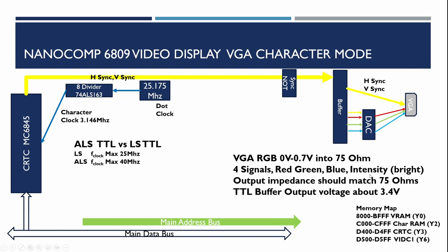The key thing about the video signal is that because it's a high-frequency signal, we need to make sure the output impedance matches the input impedance of monitors. Monitors generally always have 75 ohm input impedance, and if we don't match these properly we might get degraded video signals and reflections. When looking at the TTL buffer output, we're not dealing with 5 volts — there's a voltage drop on TTL and we're only getting about 3.4 volts — and what we're trying to do is divide that down to a maximum of 0.7 volts.